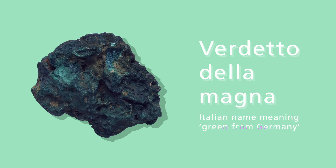However, having analysed this type of green pigment in many different paintings, we know that a specific mineral — malachite — was the most commonly encountered. Italian artists may have known this pigment as Verdetto della Magna, meaning 'green from Germany,' perhaps hinting at its possible origin.